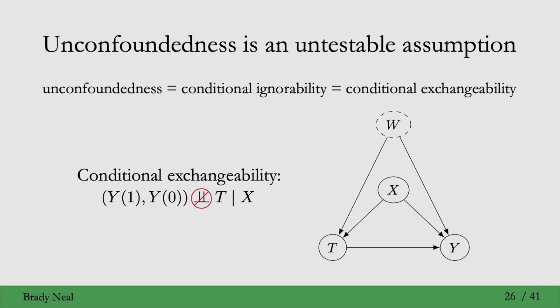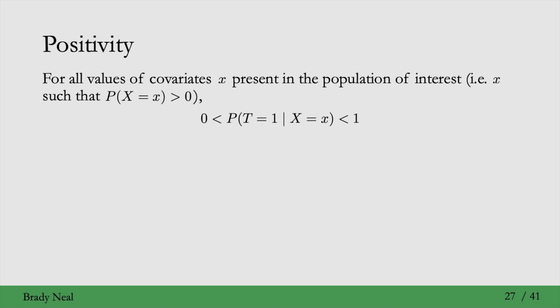Unconfoundedness is one very important assumption, and another important one is positivity. So what does positivity say? It says that for all values of covariates, x, that are present in the population—anything with probability greater than zero—we have that the probability of treatment is greater than zero for all values of treatment.